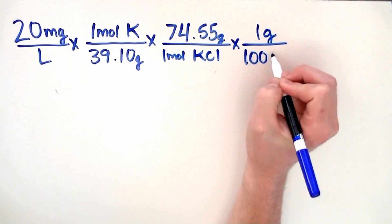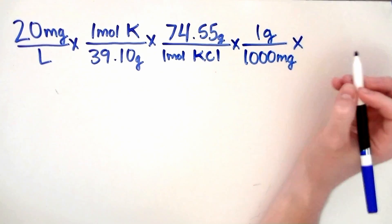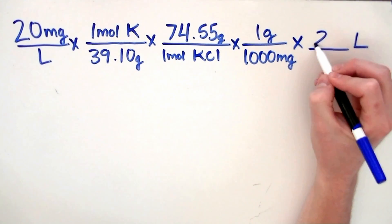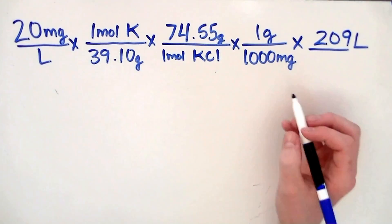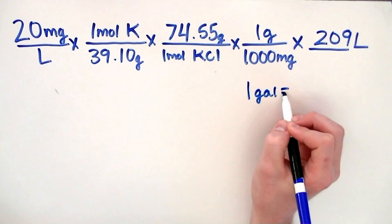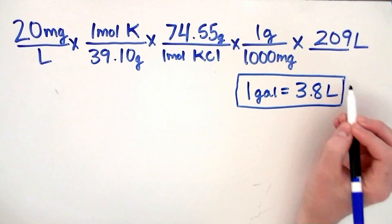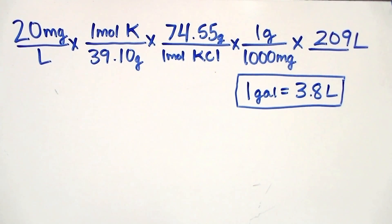It's at this point we want to get out of milligrams and into grams so we divide by 1,000 milligrams. The last step in this calculation involves multiplying by the volume in liters your aquarium is. We're using a 55 gallon aquarium which is 209 liters. Now don't forget that one gallon equals 3.8 liters so you can put your own number here.